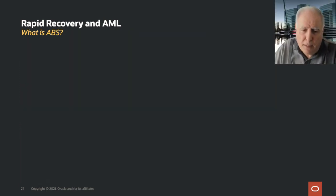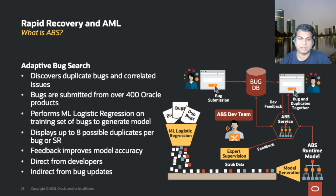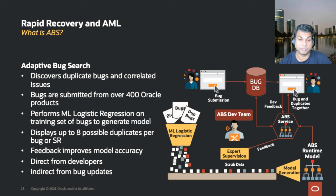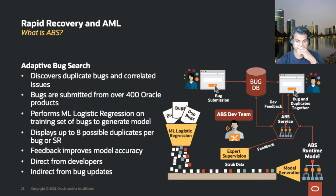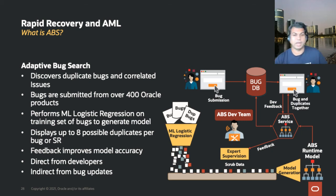Can you describe ABS? ABS stands for adaptive bug search. It's a piece of technology built internally to discover duplicate bugs and any correlated issues. We started building this with data from more than 400-plus Oracle products. It uses different kinds of technology like logistic regression and triplet loss, where it optimizes its model on the training set to generate accurate duplicate results. We started with about eight different possibilities for every issue and are now down to one or three possibilities at most. The accuracy of these models is as high as 90%. We're working with developers directly and through bug updates, and feedback is significantly improving accuracy. The idea is that eventually we don't need a human to troubleshoot or diagnose these problems — if there's a known issue and a known patch, it should be automated.